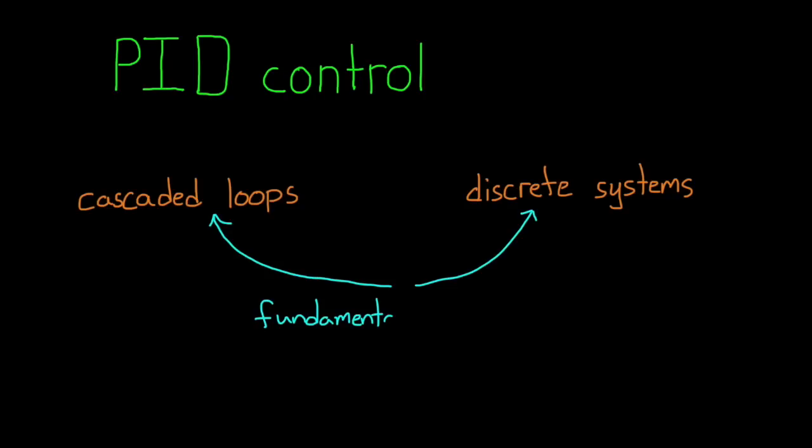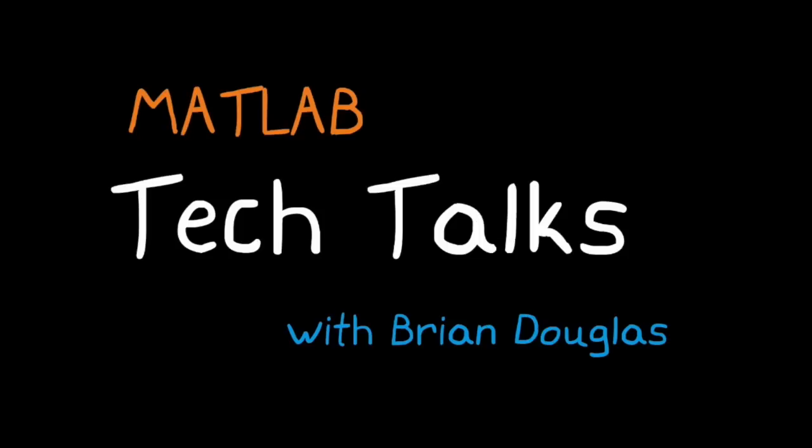With the overview of PID tuning techniques behind us, we can now move on to discussing two very important concepts with PID control: cascaded loops and discrete systems. Both of these concepts are fundamental to most practical control systems, and they each change the way you approach and think about your problem. Therefore, I think they are worth spending some time to discuss in a bit more detail. I'm Brian, and welcome to a MATLAB Tech Talk.